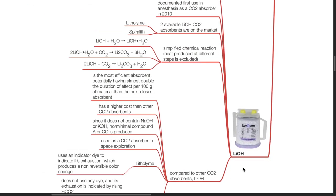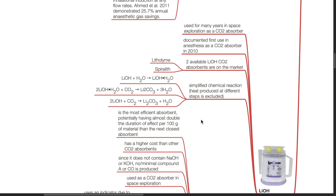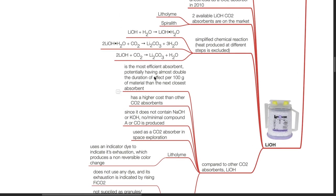Lithium hydroxide has been used for many years in space exploration as a CO2 absorber. Its documented first use in anesthesia as a CO2 absorber is in 2010. Two available lithium hydroxide CO2 absorbents are on the market: Litholime and Spiralith. Simplified chemical reactions: LiOH + H2O → LiOH·H2O; 2LiOH·H2O + CO2 → Li2CO3 + 3H2O; 2LiOH + CO2 → Li2CO3 + H2O. Compared to other CO2 absorbents, LiOH is the most efficient, potentially having almost double the duration of effect per 100g than the next closest absorbent.